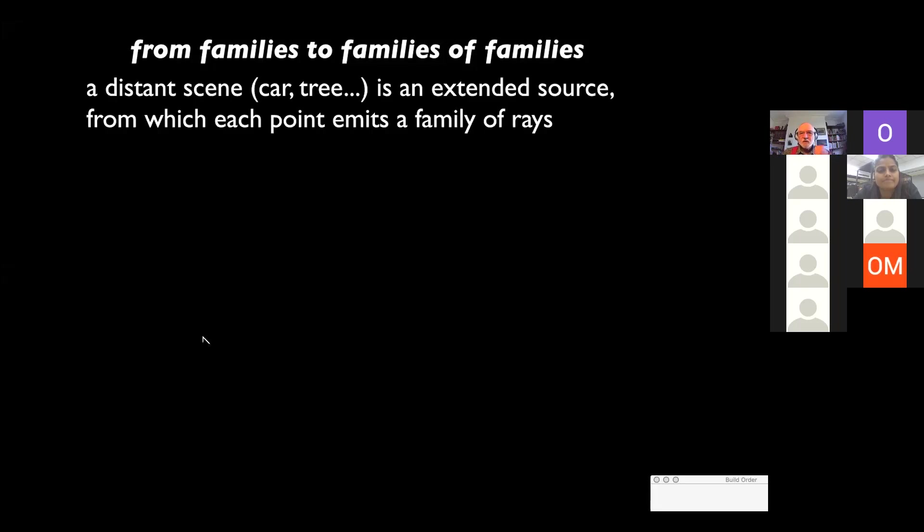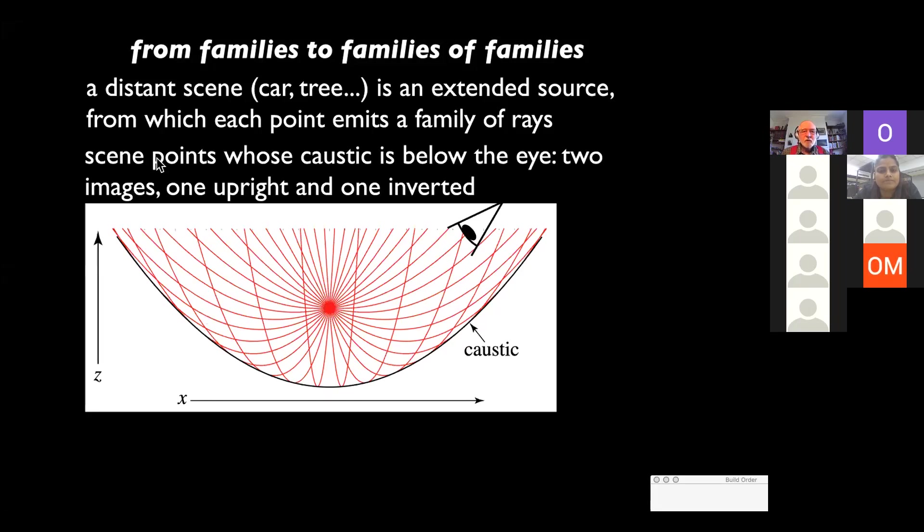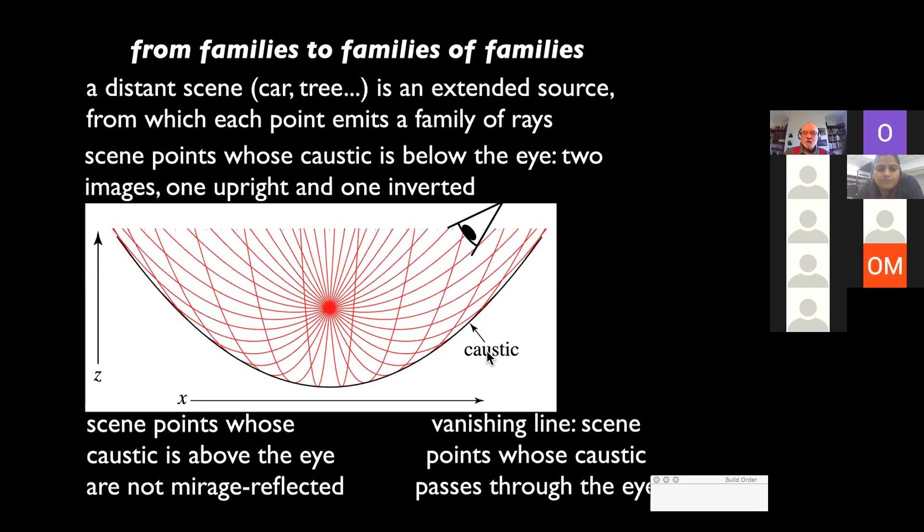Now, of course, an object is a collection of source points. So, to understand the mirage reflection of an object, you have to consider families of families of rays. Here's the distant scene. It's an extended source. Each point emits a family. Points on the scene whose caustic is below your eye, you see two images, one upright and one inverted. That's the mirage. Scene points whose caustic is above the eye, you don't see any mirage reflection. So, the caustic has a significance. The vanishing line, which determines which part of the object is mirage reflected and which part isn't, is the points on the scene whose caustic passes through your eye.